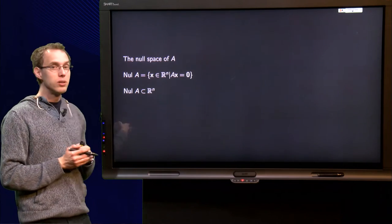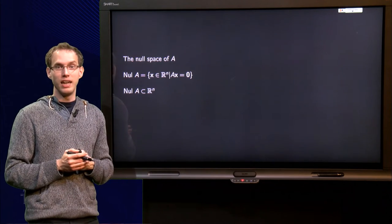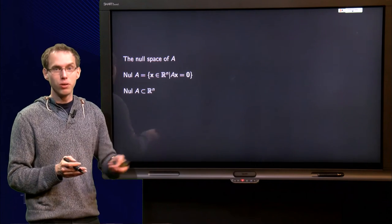We see that null A is a subset of R^n, because if you want to be able to compute A times X, you need a vector in R^n, otherwise you cannot do the computation at all.